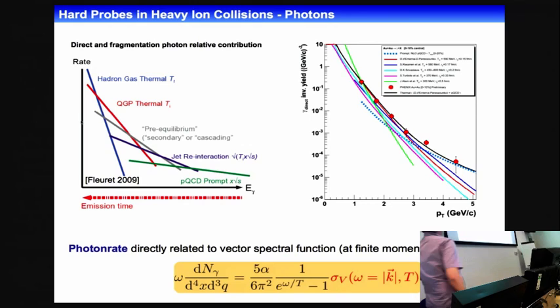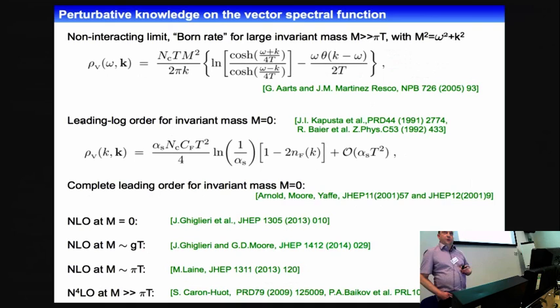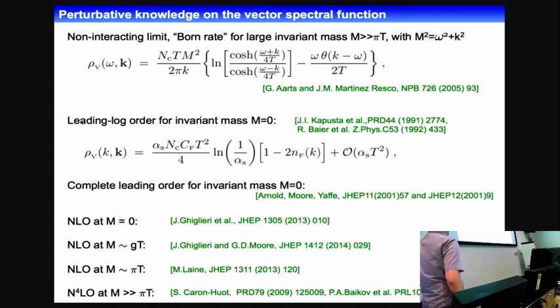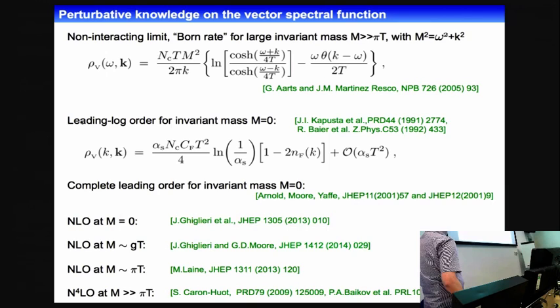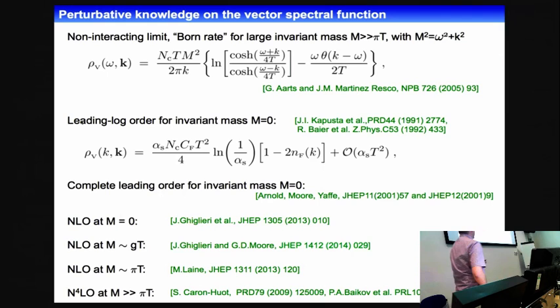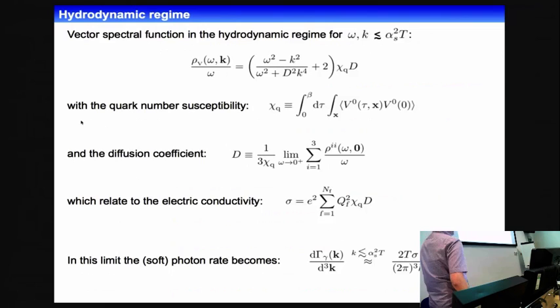Moving to photons: we are now interested in the vector spectral function at finite momentum to extract photon rates. First, some words about the perturbative knowledge of the vector spectral function, which goes back many decades with the leading order known from those years. There are different perturbative calculations depending on which scale and which invariant masses you are looking at. To compare to lattice calculations, one needs to interpolate between different perturbative calculations. In addition, one needs the momentum dependence of the spectral function in the low omega region, where hydrodynamics helps.